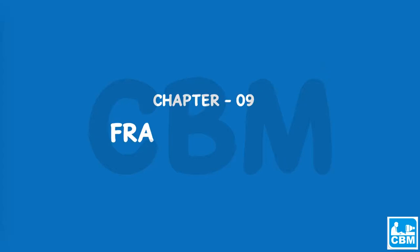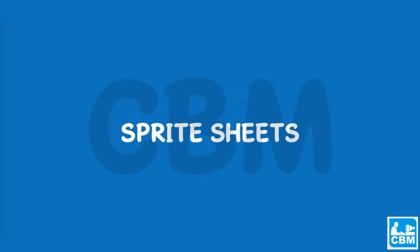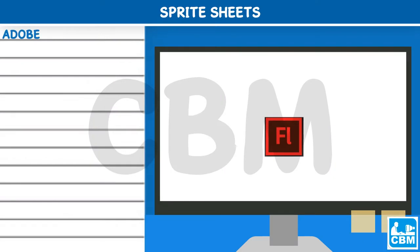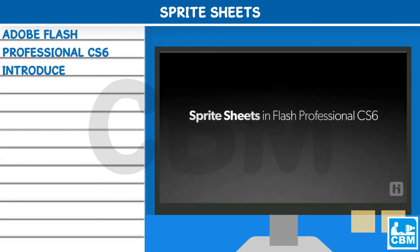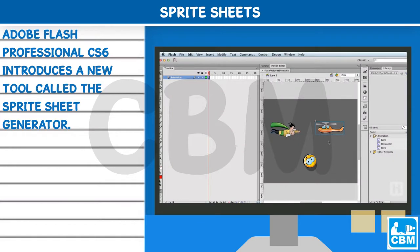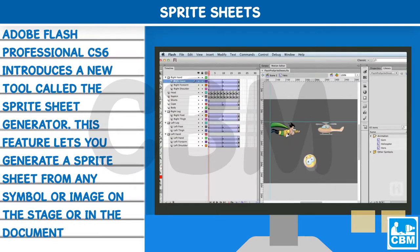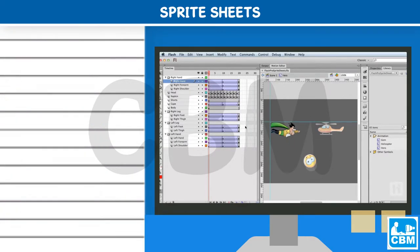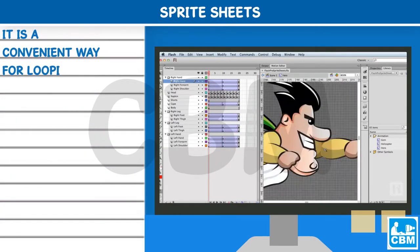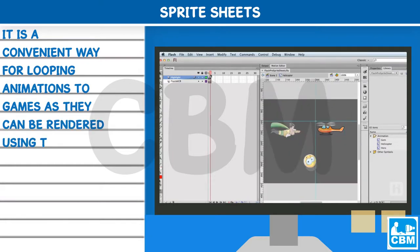Chapter 9: Frame-by-frame animation and Sprite Sheets. Adobe Flash Professional CS6 introduces a new tool called the Sprite Sheet Generator. This feature lets you generate a sprite sheet from any symbol or image on the stage or in the document library. It is a convenient way for looping animations in games, as they can be rendered using the GPU.